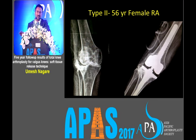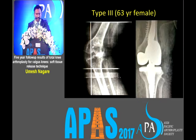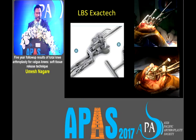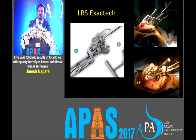We started releasing and then realized that we also had flexion deformity, so we ended up using the CCK knee. This is a type 3 deformity where you have to use a CCK knee. I use a ligament balancer for these cases and found it very useful to give the exact femoral rotation according to the patient's native knee.